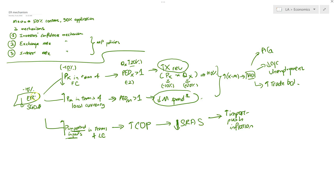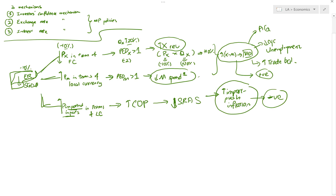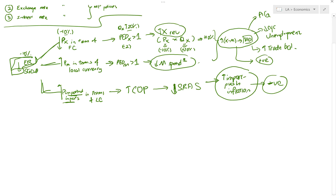With this exchange rate depreciation mechanism and its three branches, you are always able to see two sets of stories. This is the positive impact of exchange rate devaluation or depreciation. This is the negative impact of depreciation. With this mechanism, a student is able to answer a question showing two sides, demonstrating economic analysis and presenting a balanced argument.